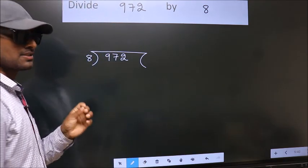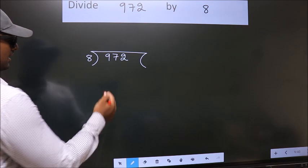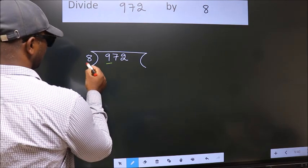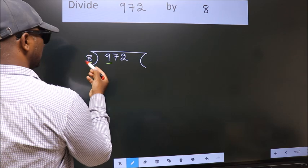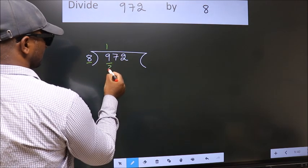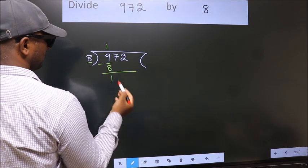This is your step 1. Next. Here we have 9, here 8. A number close to 9 in 8 table is 8 once 8. Now, we should subtract. We get 1.